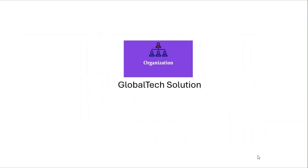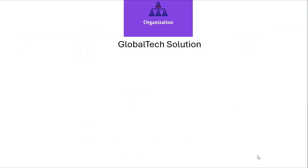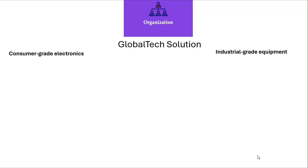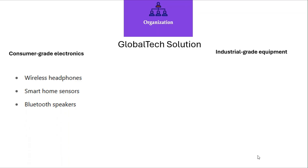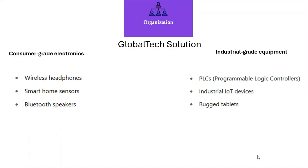Assume there is a company called Global Tech Solution and they sell electronic products or equipment to their customers, and they have two different product segments. One is Consumer Grade Electronics and another is Industrial Grade Equipment. Consumer Grade Electronics includes products such as wireless headphones, smartphones, sensors, and Bluetooth speakers — mainly for their retail customers. Industrial Grade Equipment includes PLCs, Industrial IoT Devices, and Rugged Tablets — mainly for their industrial or manufacturing customers.